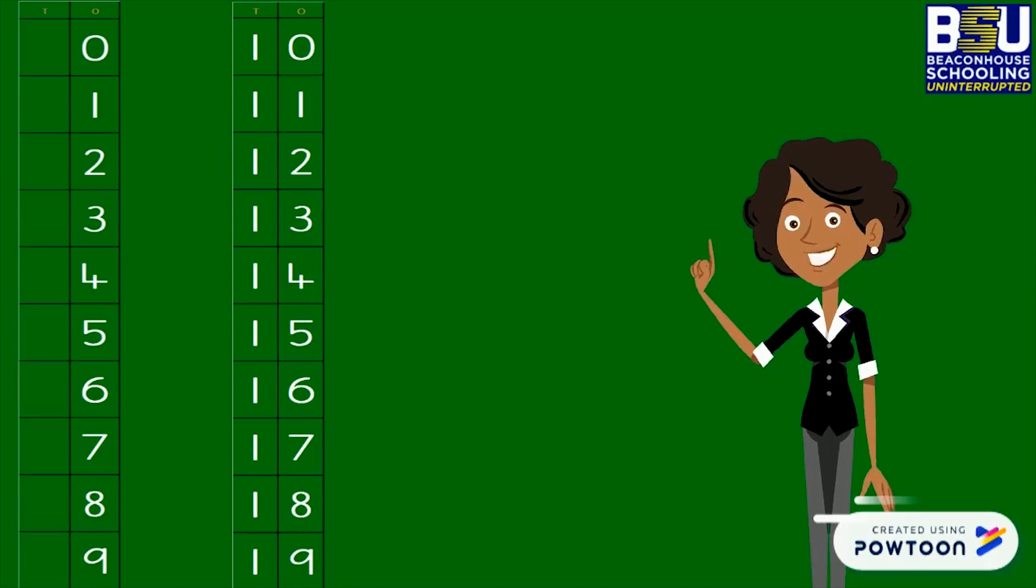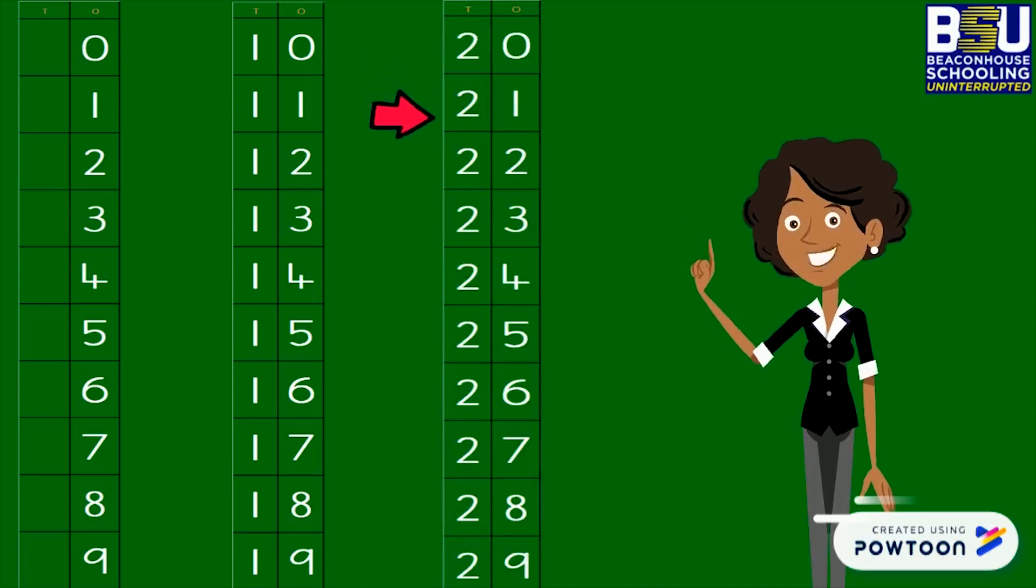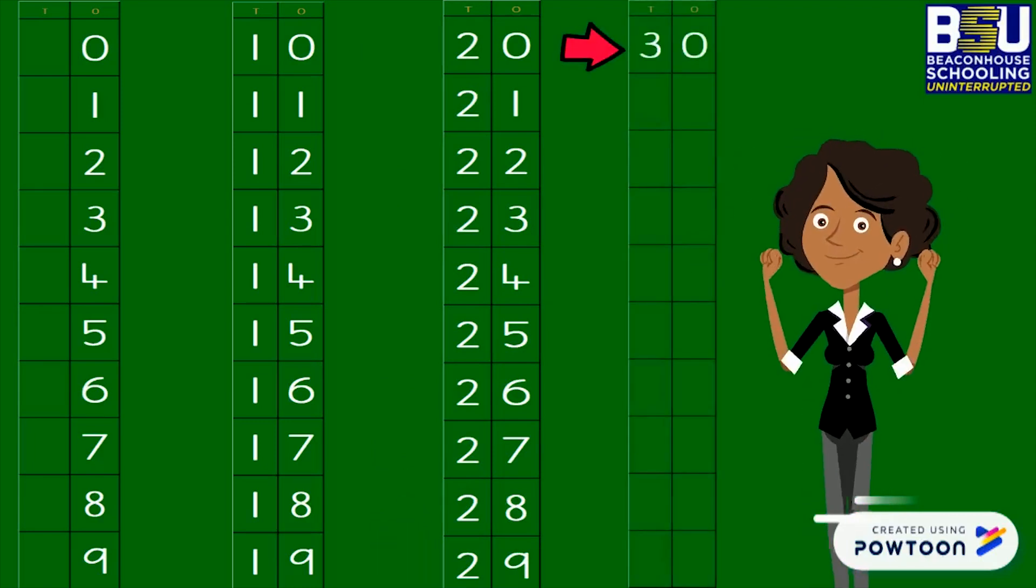Next comes the family of? Yes! 20. 20, 21, 22, 23, 24, 25, 26, 27, 28, 29. Yay! 30!